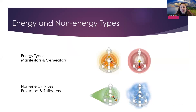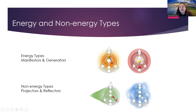We have the energy and the non-energy types. The energy types are Manifestors and Generators, and the non-energy types are Projectors and Reflectors. So we have the force, the energy, and we have the awareness — the non-energy and energy effectiveness specialization.